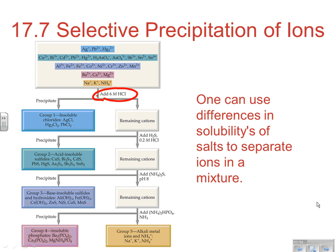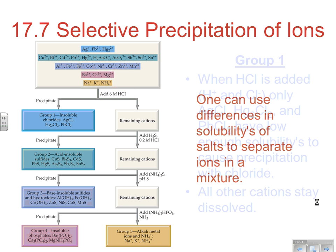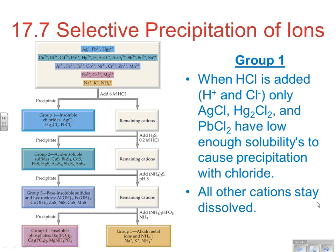So if we add 6 molar HCl and get a precipitate, that tells us we have the presence of at least one of those group 1 metals. We're going to look at how we can use differences in solubilities of salts to separate those ions and identify them. Group 1 is basically: when we add HCl as a strong acid giving H⁺ and Cl⁻, only silver, mercury, and lead are low enough in solubility that they will form a precipitate with the chloride. All other cations are going to stay dissolved. If we get a precipitate here, we know we have one or more of those, and we'd have to do something more to determine which specific one is present.